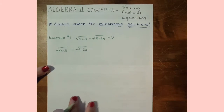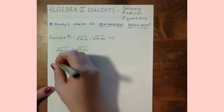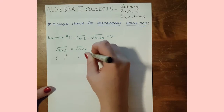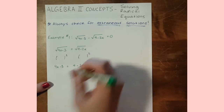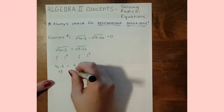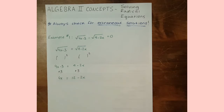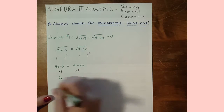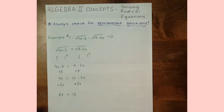From here we have two radicals, one on each side, and to get rid of those we can just square each side. We get 4x minus 3 equals 9 minus 2x. Now we have a pretty comfortable-looking equation — basic algebra. We add 3 to both sides to get 4x equals 12 minus 2x, then add 2x to both sides to get 6x equals 12, and dividing by 6 gives us x equals 2.